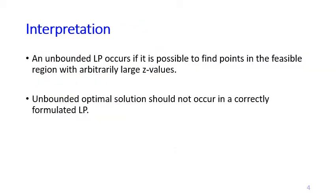So an unbounded LP problem occurs if it is possible to find points in the feasible region with arbitrarily large z-values. And then you can find another point that has even better z-values, and another point, another point, because there is no bound to keep going to find better and better solution.